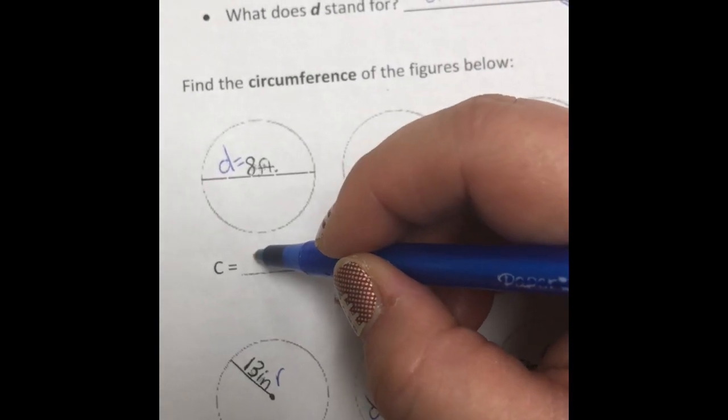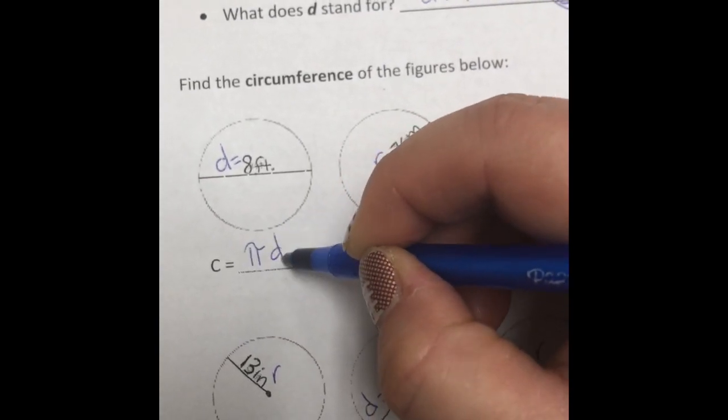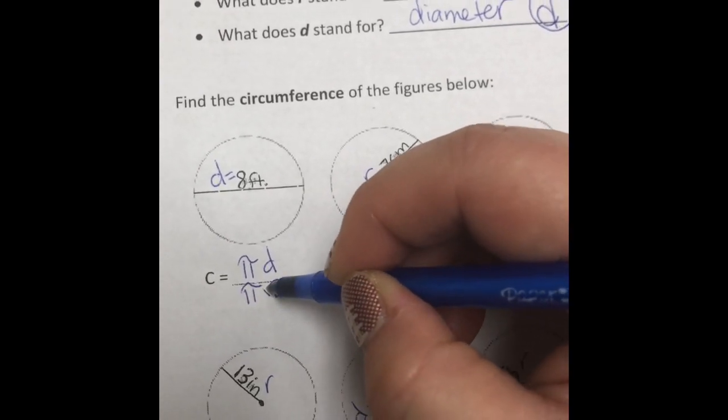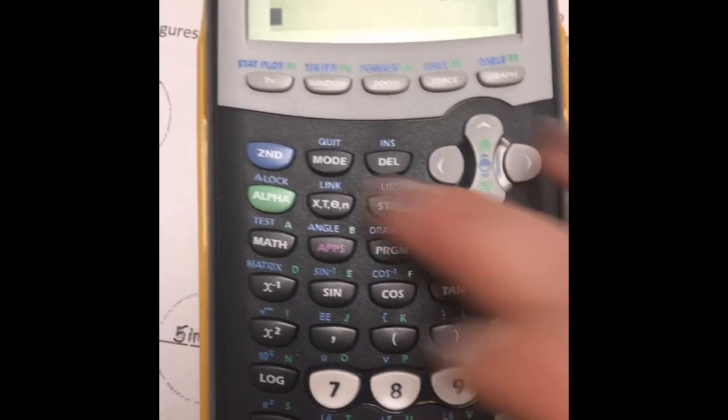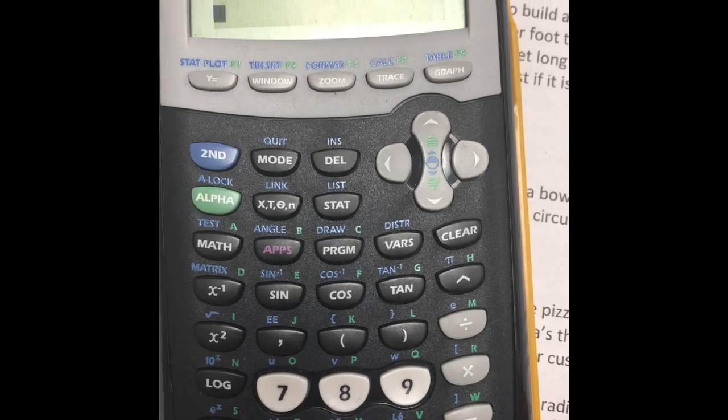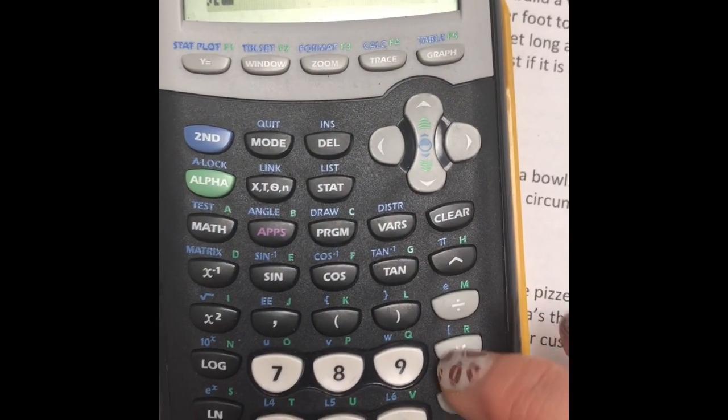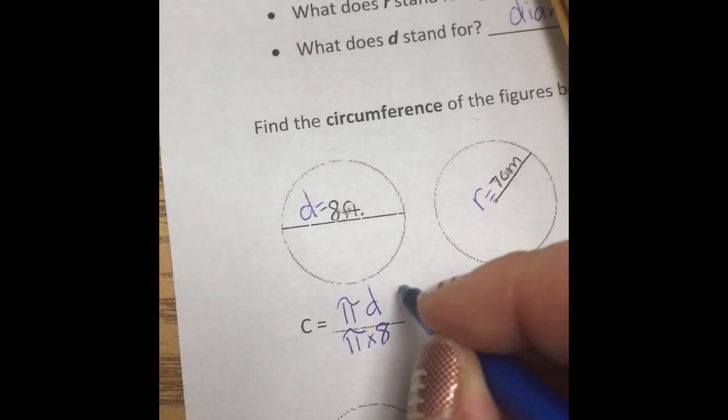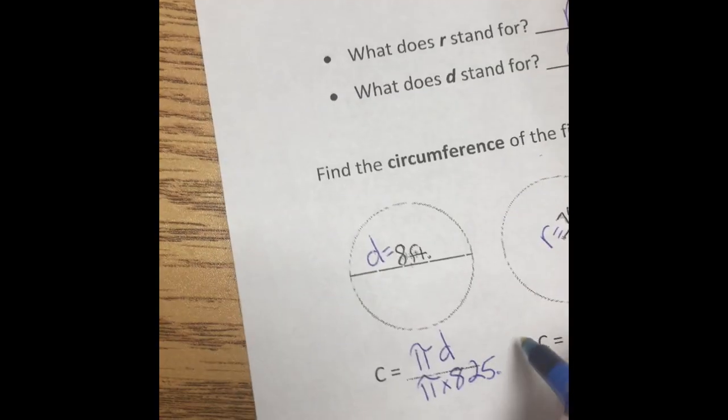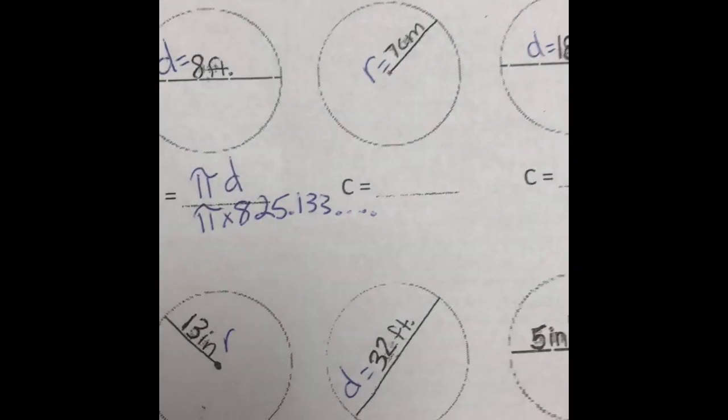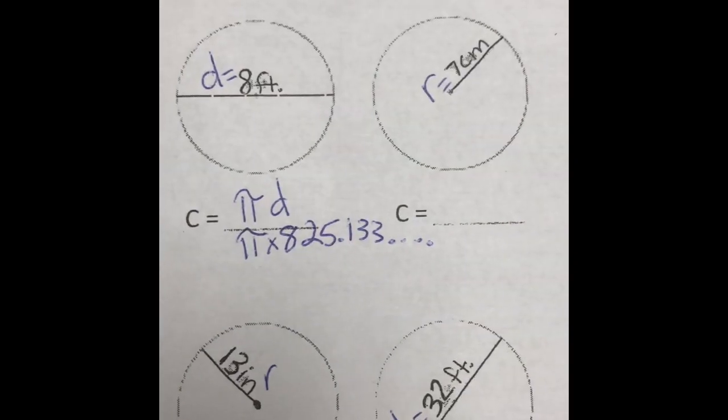So if I'm going to use this formula, I would do C equals pi D, which means I would plug in pi in the diameter. Now on your calculator, you can put times 8 or you can just type in both. You could do pi, which is second, and then pi times 8 and enter. Or you could do pi times 8 and enter. It doesn't matter. Either way, you get the same answer. So your answer would be 25.133, etc., etc., etc. And you show that it's an irrational number by giving me those three dots to show that it keeps going and going and going.